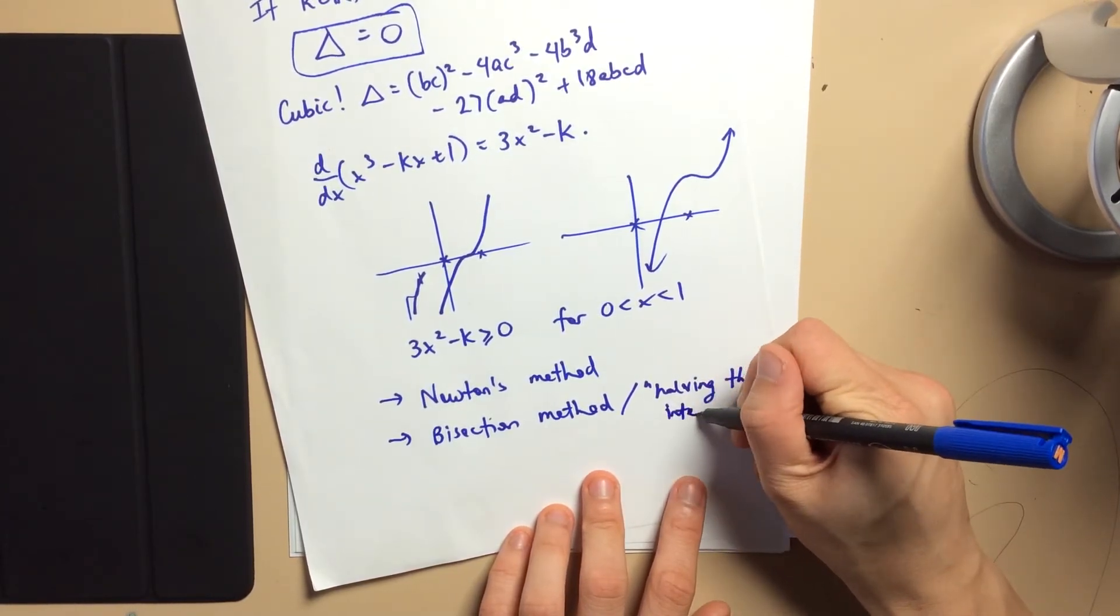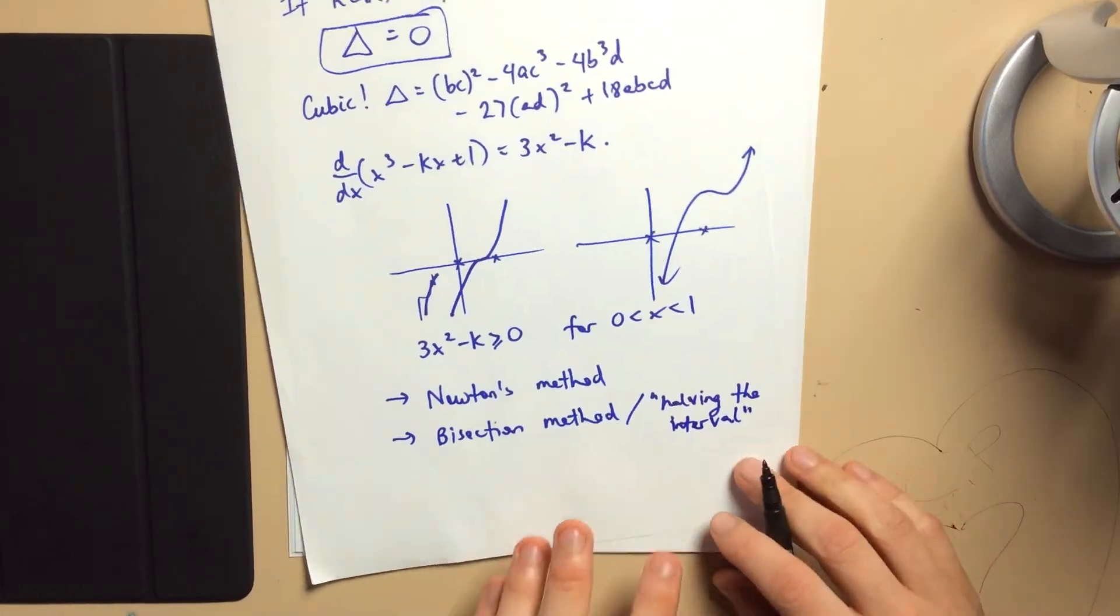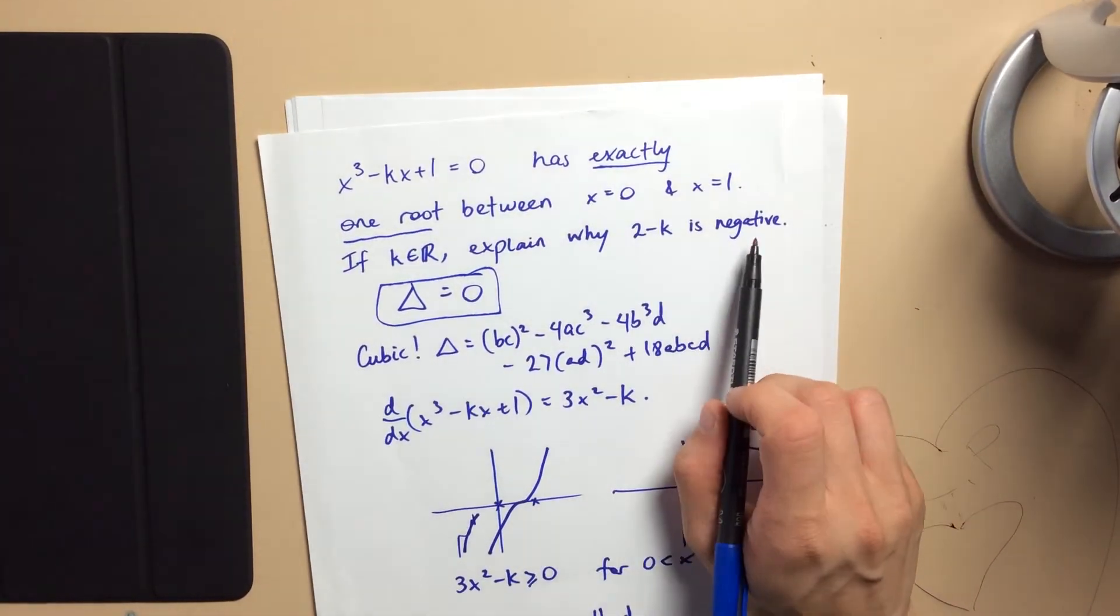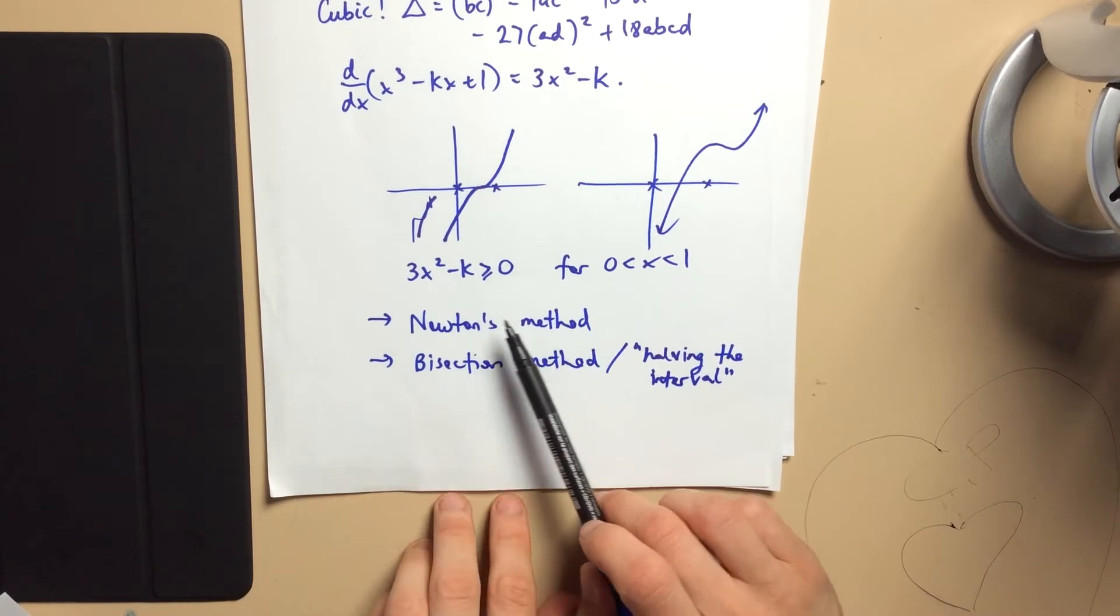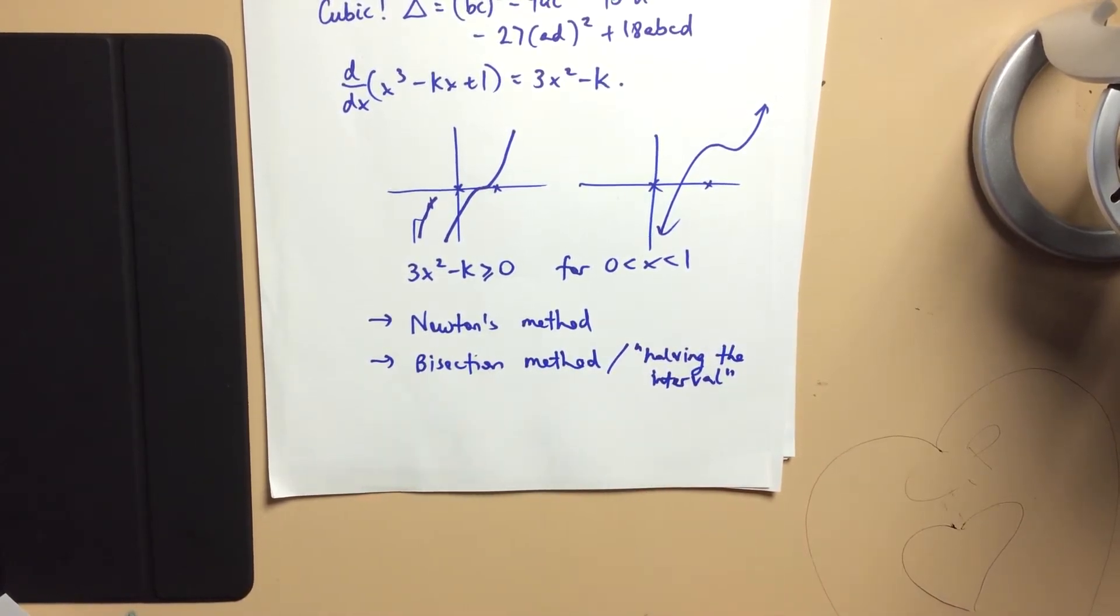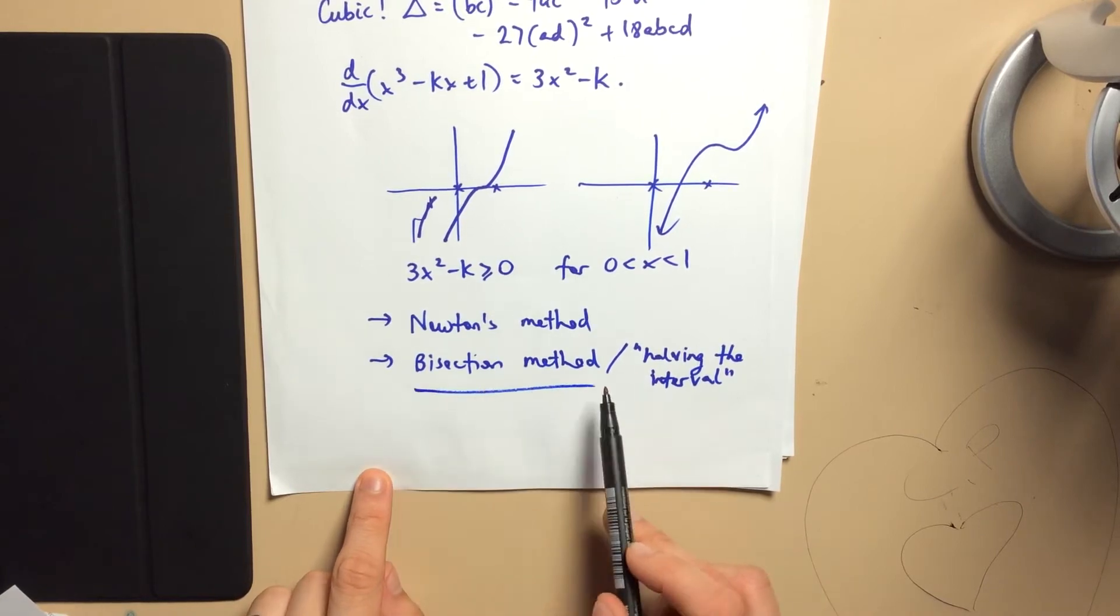And the answer is, well, they definitely are. But the question is which one? Well, you're trying to show that something is negative. Now, which of these methods, techniques, algorithms has anything to do with positive or negative? And the answer is, it's the bisection method.